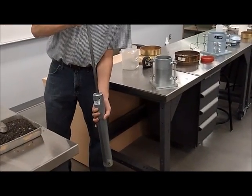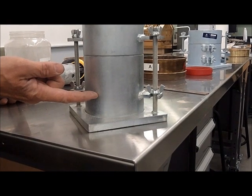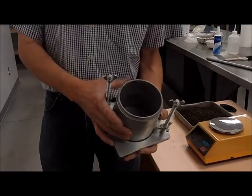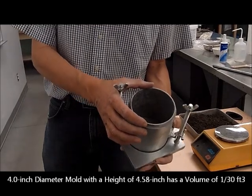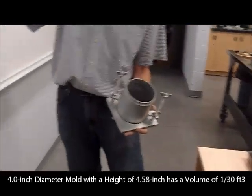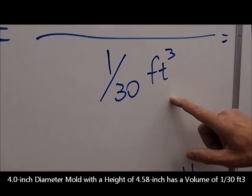So we're going to do it in 3 stages, and approximately 1/30 each. 4 1/2 inch height, 4 inch in diameter, gives us a volume of 1 over 30 of a cubic foot. So that would be our volume.